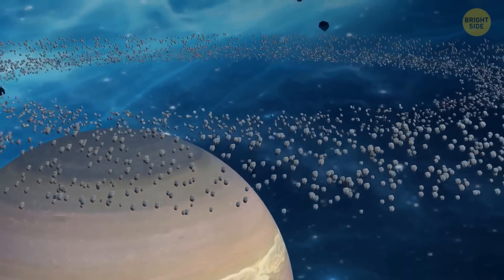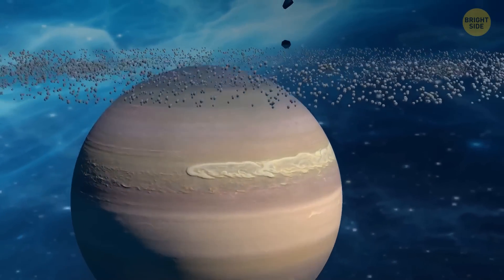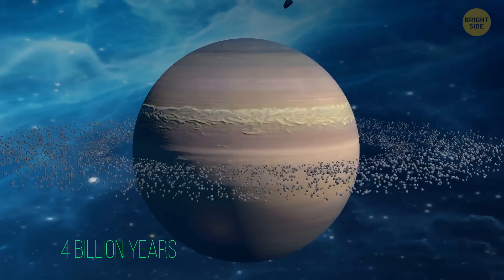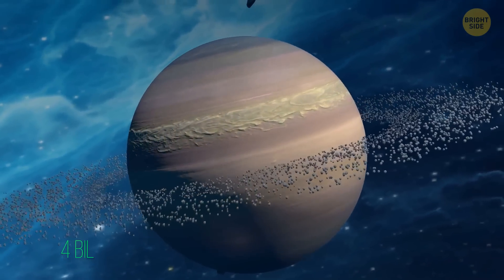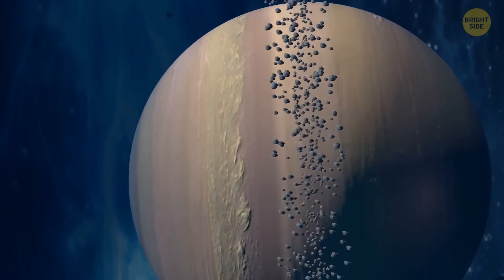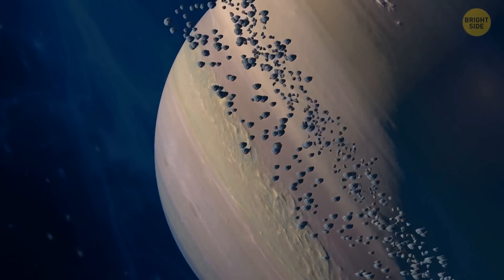If these rings formed at the same period as Saturn did, they would have had more than 4 billion years to collect debris and dirt coming from micrometeorite collisions. But these rings mainly consist of water ice, no dirt at all, which means they're younger than expected.